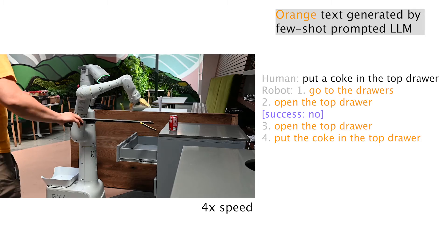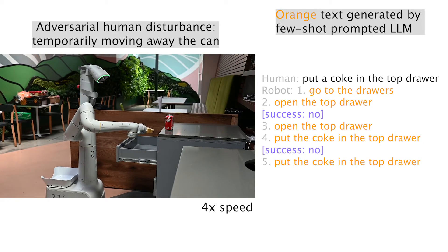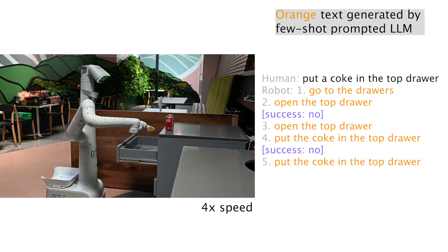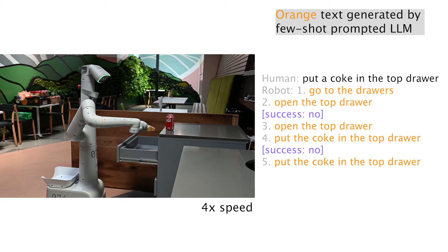Similarly, the human operator forces another failure when the robot tries to pick up the coke, and the robot is able to recover from its failure again.